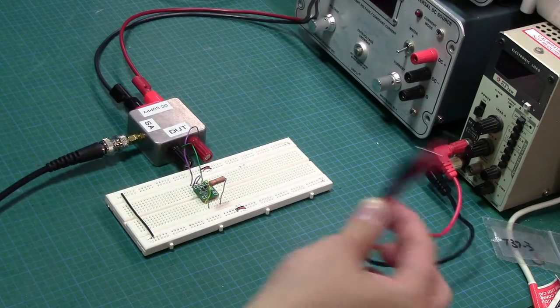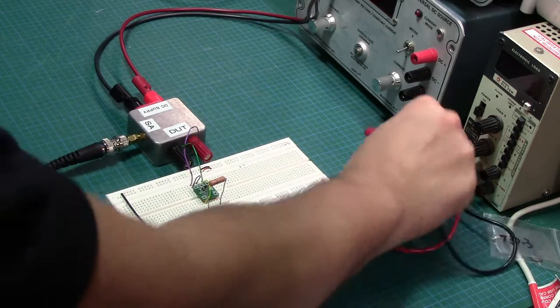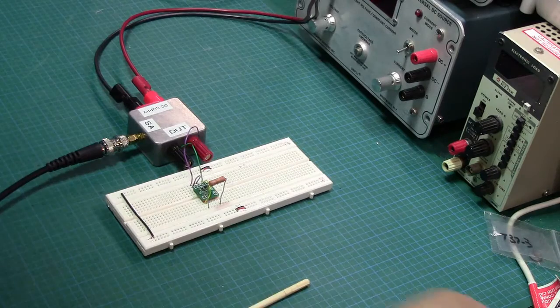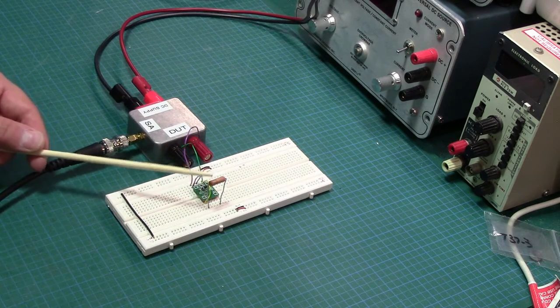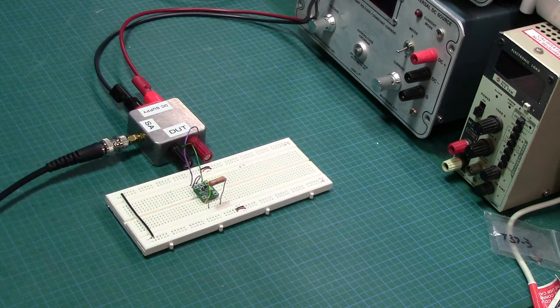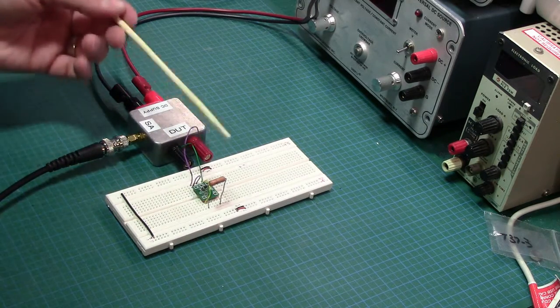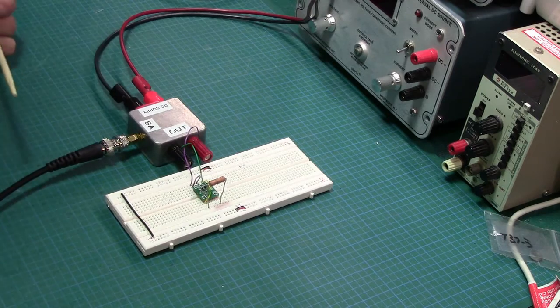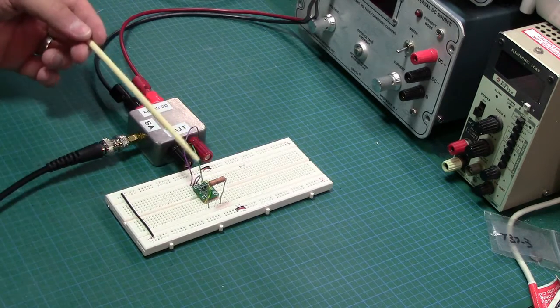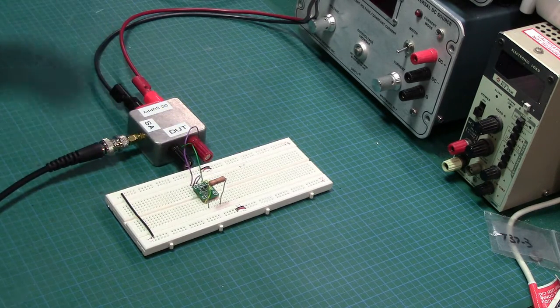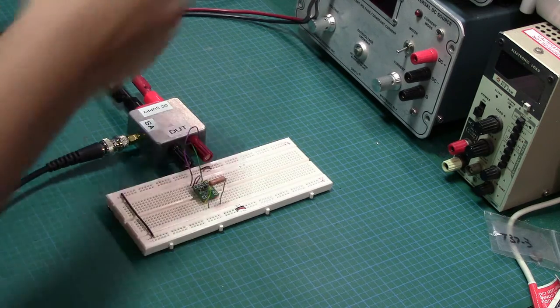All right, so we disconnected our electronic load, we're not going to need that. What I've put in place is a 62 ohm resistor. Nice. Just what we needed. I have no idea what the power rating of this resistor is. It's big, but not big, big, big. So, I'm going to leave this on only for a few moments.